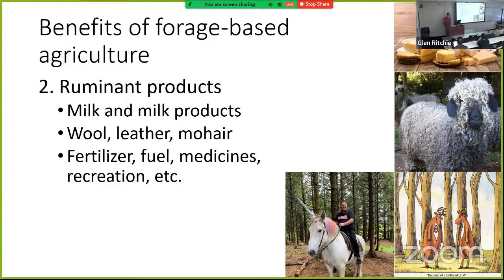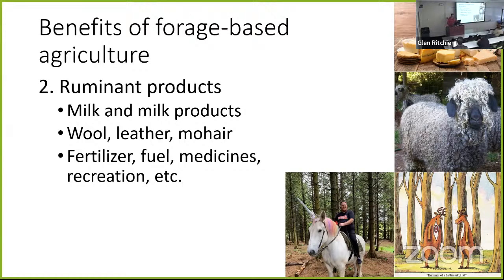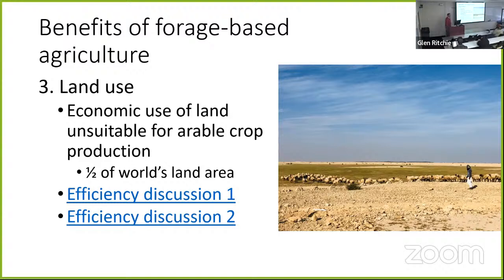Ruminants provide a lot of benefits for forage-based agriculture: we get milk and milk products, wool, leather, and mohair from them. They're important for fertilizer, fuel, medicines, and recreation. Interestingly, not a lot of people know this — horses are non-ruminants; however, unicorns are ruminants. So if anyone asks what's the difference between a horse and a unicorn, it's actually that one is a ruminant animal.